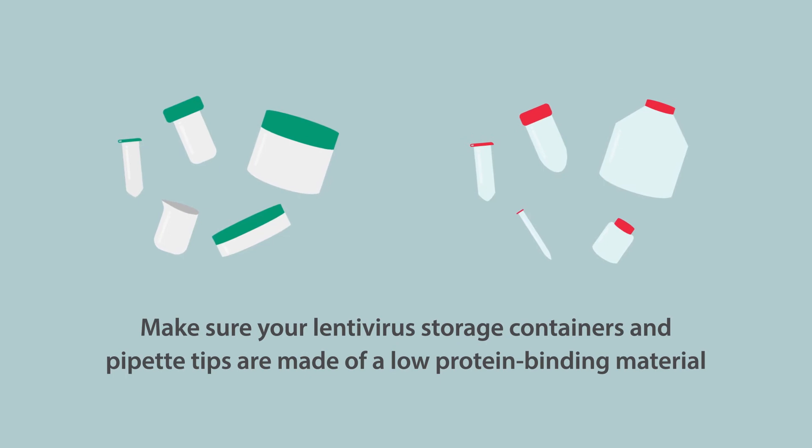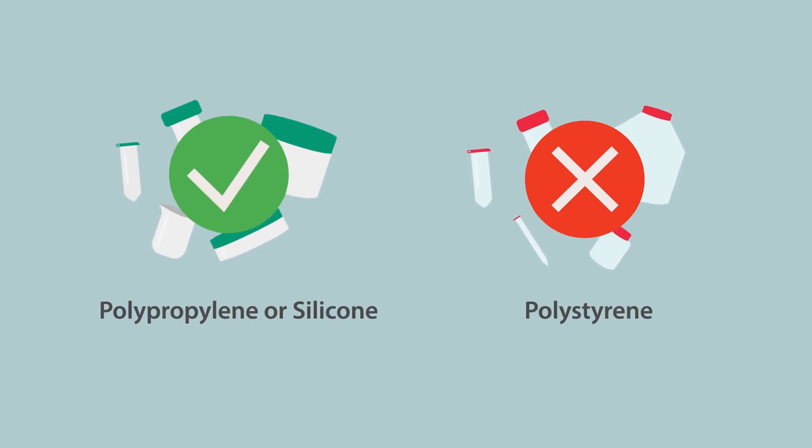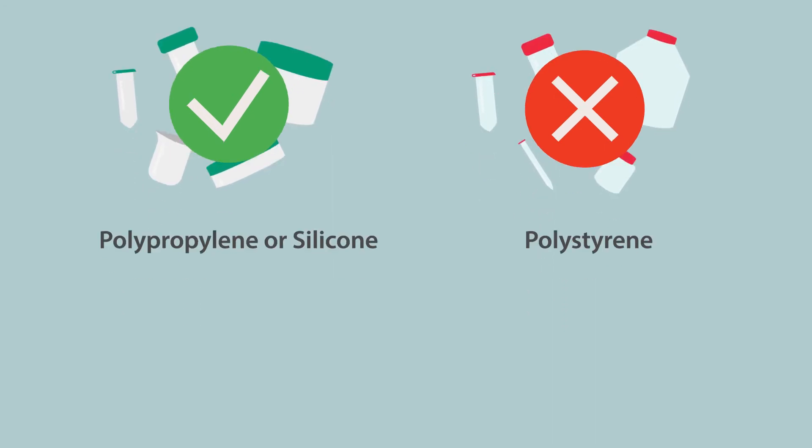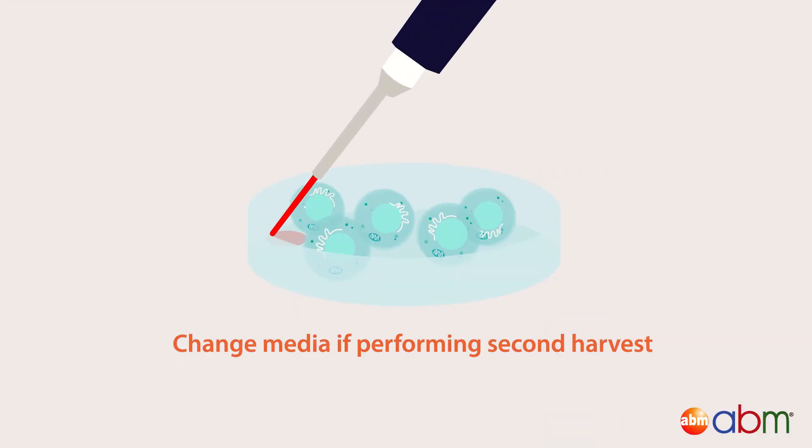Make sure your lentivirus storage containers and pipette tips are made of a low-protein binding material like polypropylene or silicone, and not made of a hydrophobic plastic like polystyrene. Add fresh media to the plate if you will perform a second harvest.